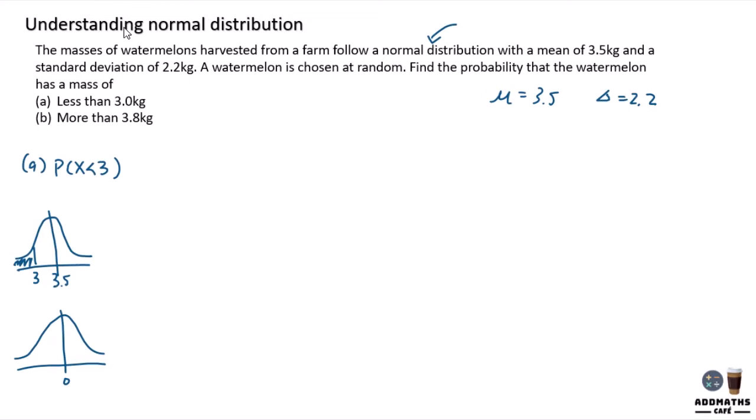So the middle will be 0 and this will be on your left. So to transfer x to z, apply the formula. You know that your x is 3 minus your mean divided by 2.2, your standard deviation, and this will give you P(z less than negative 0.2272).